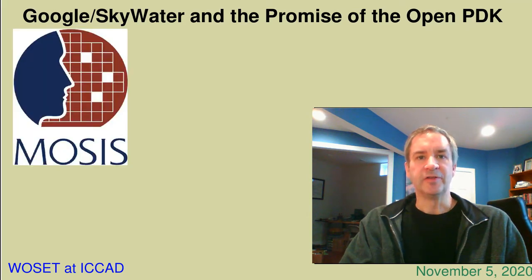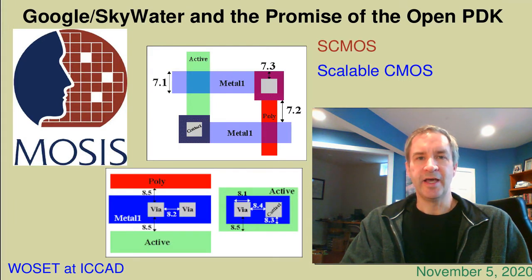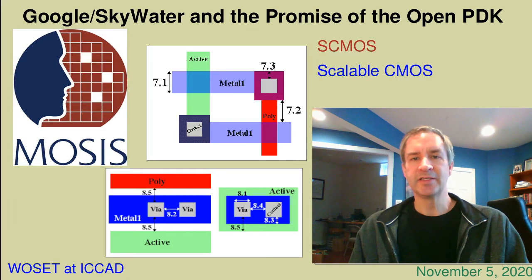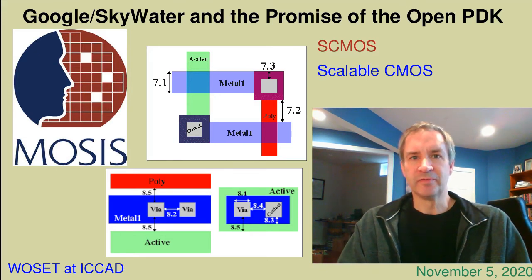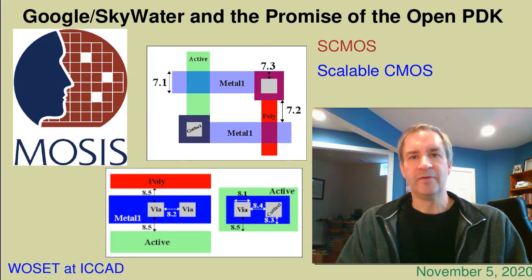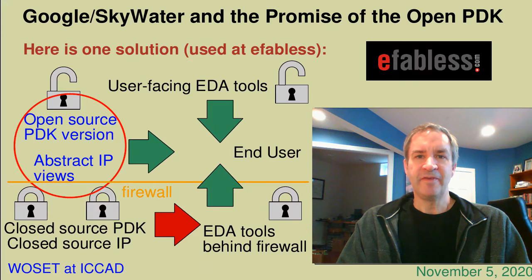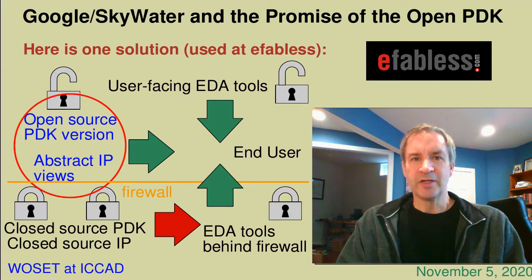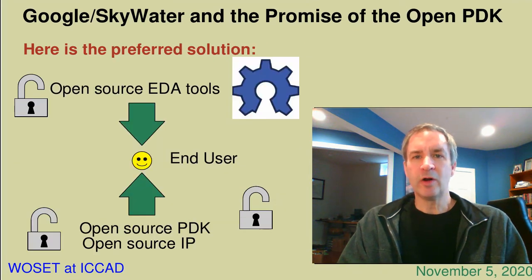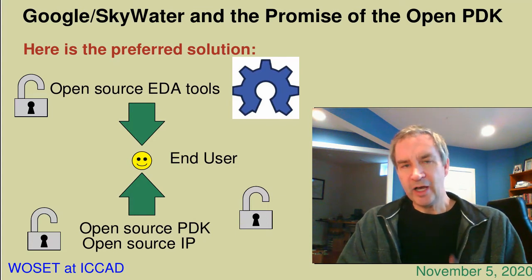The MOSIS Foundation, the shuttle-run service provider, provided support in multiple fabs and processes with a partly open source PDK, which it called SCMOS for Scalable CMOS. The SCMOS PDKs worked because they used conservative rules that didn't reveal manufacturing limits. Device models and parameters, though, were not freely available and could only be obtained after signing an NDA through MOSIS. Some of what we've done at eFabless to work around the problem of proprietary foundry data is along the same lines as the MOSIS model — giving the user conservative rules or obfuscated cell views. But the only real workable solution is to free the foundry data and make it all available to the end user. For that, we need an open source PDK.